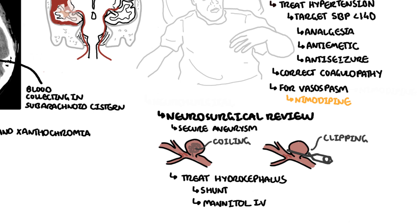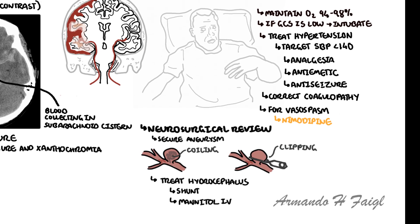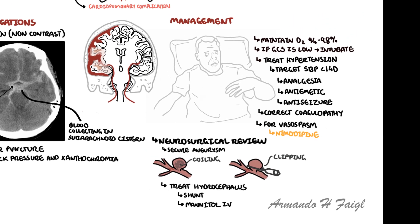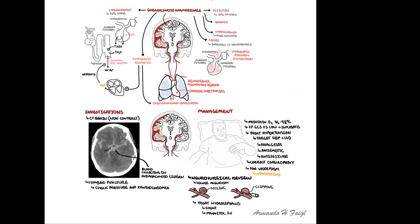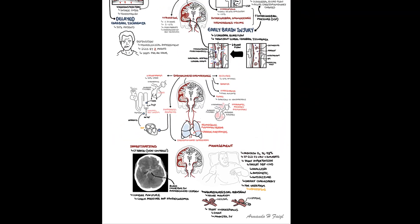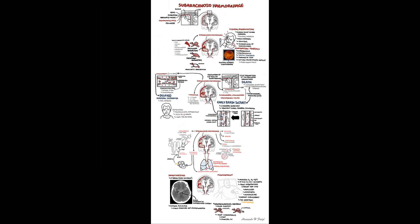In summary, subarachnoid hemorrhage is bleeding within the subarachnoid space, and the most common cause is a saccular aneurysmal rupture.